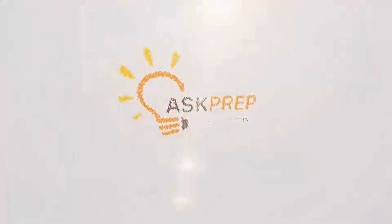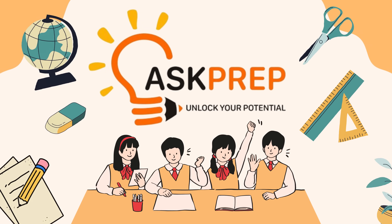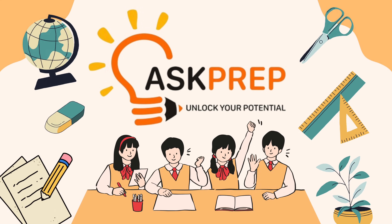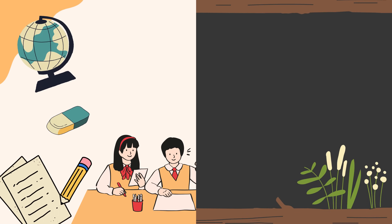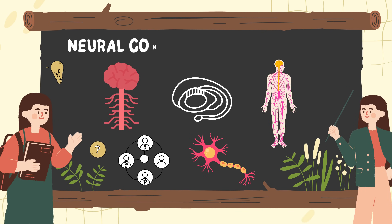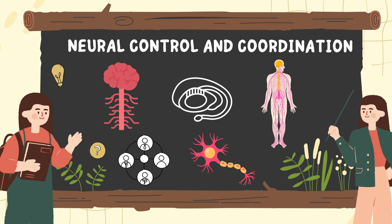Hello guys, welcome to our channel Ask Prep. Today's series is for 11th class biology. We will be studying Chapter 21: Neural Control and Coordination in detail. We have also added important notes for your exam preparation. All the best for your exam.